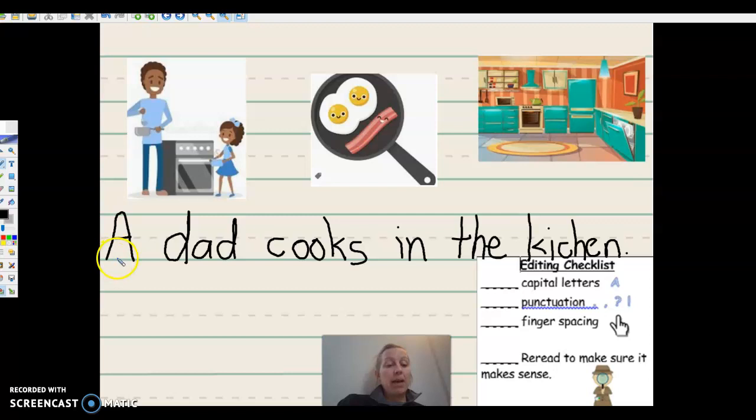Capital letters only at the beginning. I have a capital A. Do you? Look through your sentence. Do you have any other capital letters that should not be there? I do not, so I'm going to check it off. Now, punctuation comes at the end of the sentence. I have my period at the end of my sentence, so I can check it off.